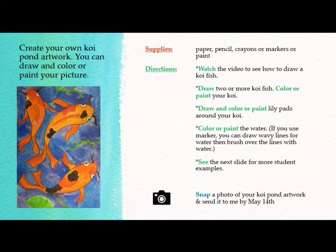For this week's project, you will create your own koi pond artwork. You can draw and color or paint your picture. You will need to gather a few supplies before you begin, including paper, pencil, crayons, markers, or paint, depending on how you want to do your project.